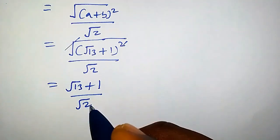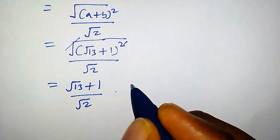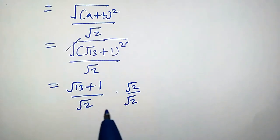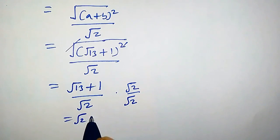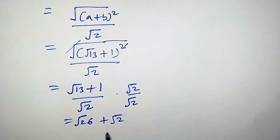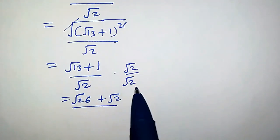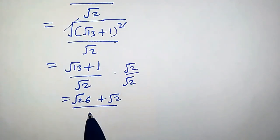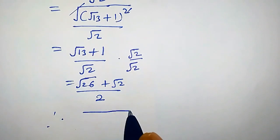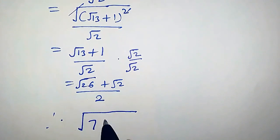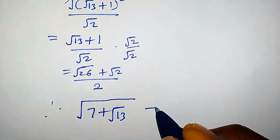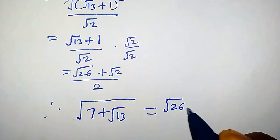We rationalize by multiplying by √2 over √2. This gives √2·√13 = √26 in the numerator, plus 1·√2 = √2, all over √2·√2 = √4 = 2.